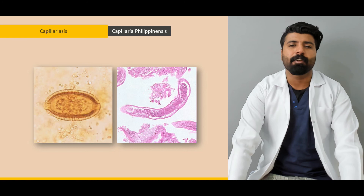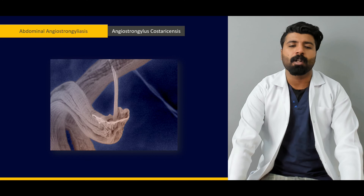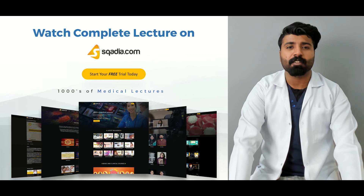Next we're going to talk about capillariasis — what capillariasis is, what's the causative organism based on its morphology, its diagnostic modalities, its signs and symptoms, and treatment options. At the end we're going to talk about abdominal angiostrongyliasis — what's the causative organism, what signs and symptoms we get, and what treatment options we have.